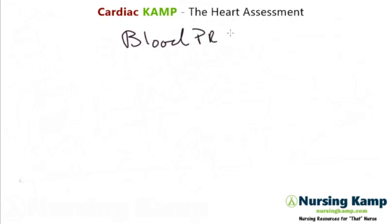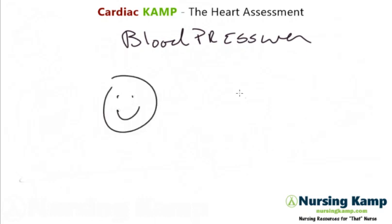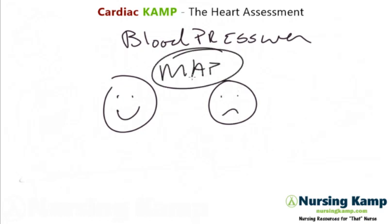Blood pressure, as we talked about in a previous lecture, is very important. In NCLEX questions, when you have blood pressure in the question, it's there for a reason — it's called real estate. When we're talking about hemodynamics and perfusion, blood pressure in the question is always about perfusion: whether you can recognize a normal or abnormal reaction, good or bad. We figure out perfusion using mean arterial pressure.